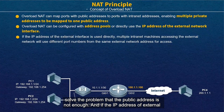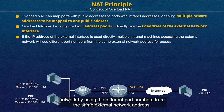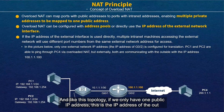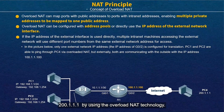If the IP address of the external interface is used directly, multiple private terminals can access the external network using different port numbers from the same external address. In this topology, we only have one public IP address — the outer interface IP 100.1.1.100. PC1 and PC2 both want to reach destination 200.1.1.1 using overload NAT technology.